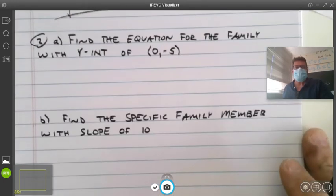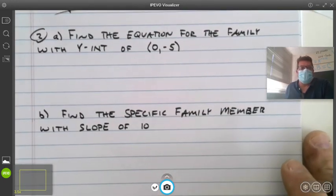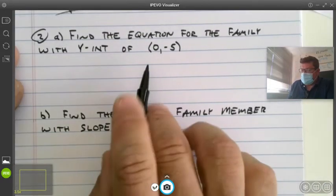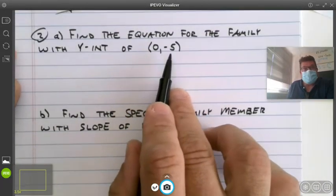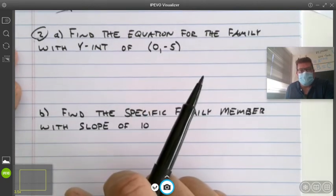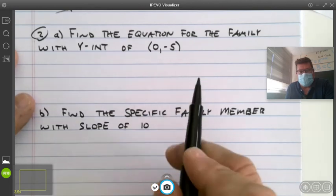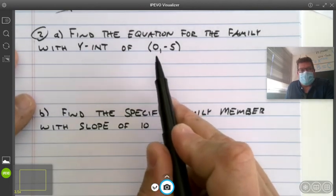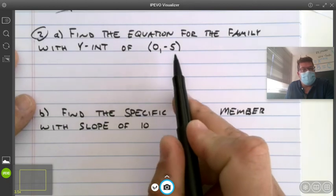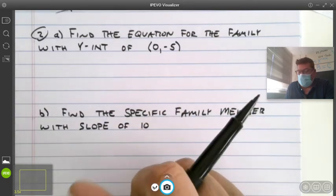Let's try another one. Find the equation for the family with y-intercept of zero, negative five. So this time, the trait that all family members have is that it passes through zero, negative five. Since that first coordinate is zero, we know that negative five is the y-intercept.